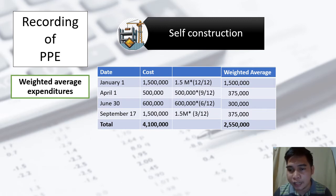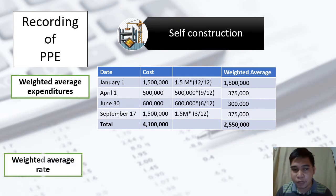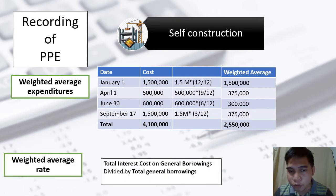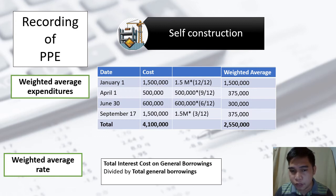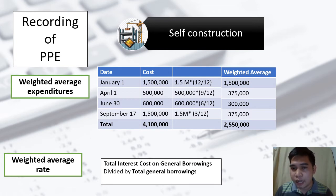To get the weighted average rate, simply take the total interest cost incurred on general borrowings and divide by the total general borrowings. Then multiply that rate by the weighted average expenditure to get the interest to be capitalized.